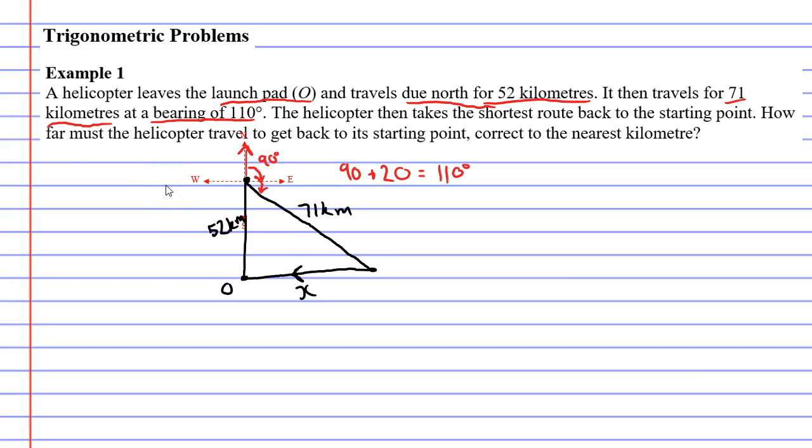Now what you'll notice is that on our triangle we have three sides marked. We don't have any angles, but I can find an angle quite simply. In this spot here, that angle is going to be 70 degrees.